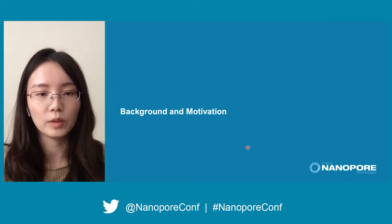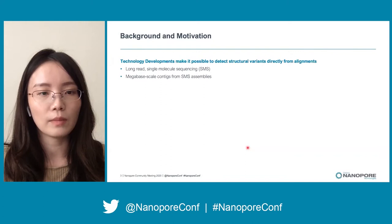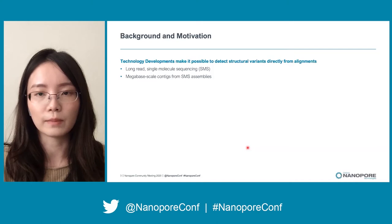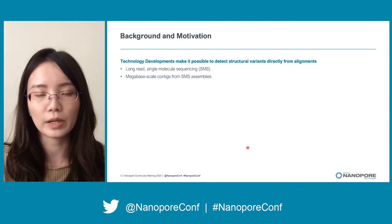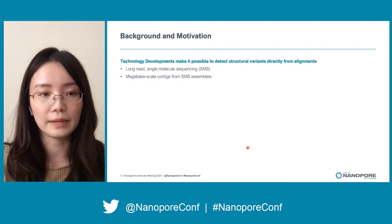First, I will talk about the background and motivation behind LRA. As long-read single-molecule sequencing is becoming more and more established as a routine for sequencing genomes, it is possible to detect structural variants directly from alignment. SVs can also be discovered from long-read single-molecule sequence assemblies, which has the benefit that the SV breakpoint may be directly decided from the assembly alignment.